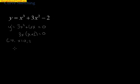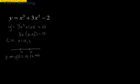To find the increasing and decreasing intervals, we set up a number line with negative 2 and 0, giving us three intervals: negative infinity to negative 2, negative 2 to 0, and 0 to infinity. We pick test values for the first derivative: f prime of negative 3, f prime of negative 1, and f prime of 1.